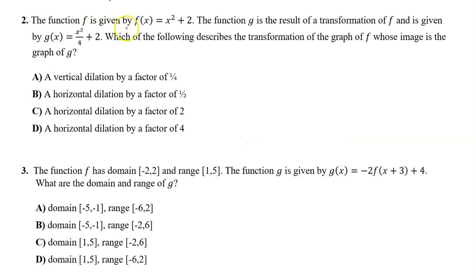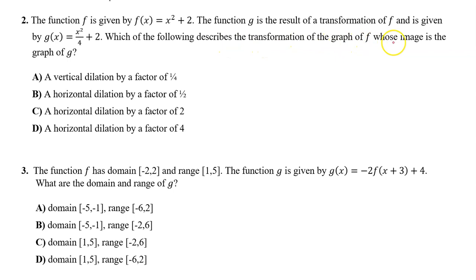Number two. The function f is given by f of x equals x squared plus two. The function g is the result of a transformation of f and is given by g of x equals x squared over four plus two. Which of the following describes the transformation of f whose image is the graph of g?